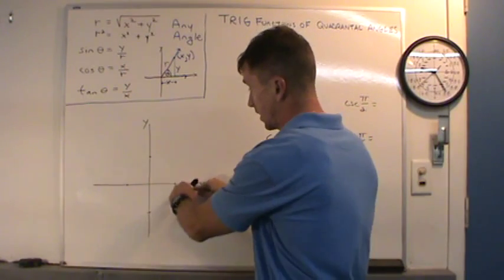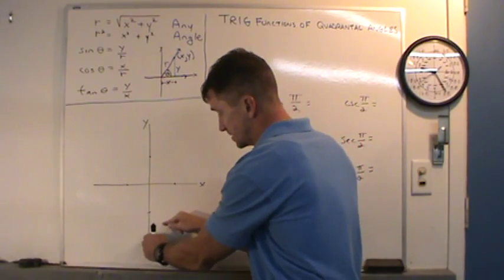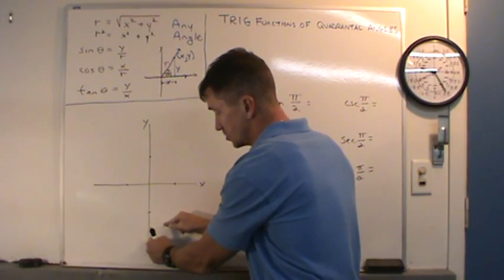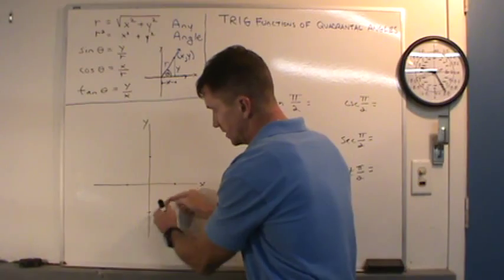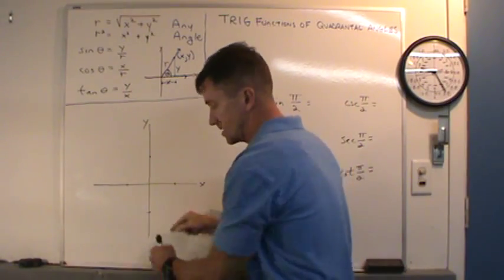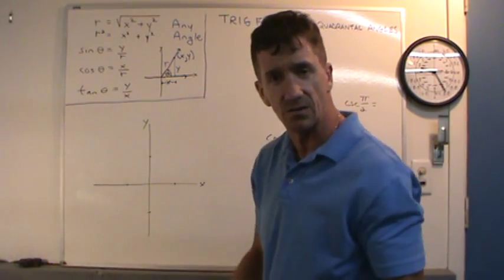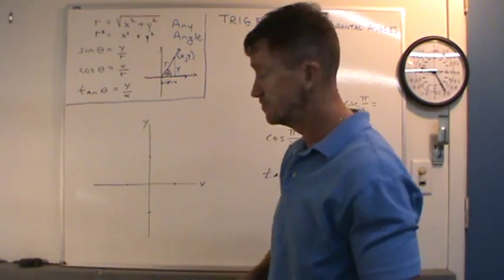Or we can go this way — an angle that went clockwise, stopped here with the terminal side lying right there — that would be an angle of negative 90 degrees or negative pi over two.